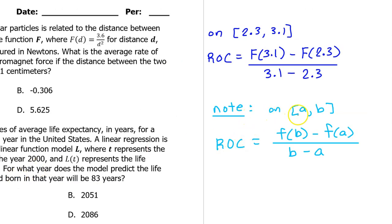Recall that in general, on the interval from a to b, the average rate of change of any function f is f at b minus f at a over b minus a. This is really just the slope, like rise over run, y minus y over x minus x. So, on the interval from 2.3 to 3.1, the average rate of change will be f at 3.1 minus f at 2.3 over 3.1 minus 2.3.